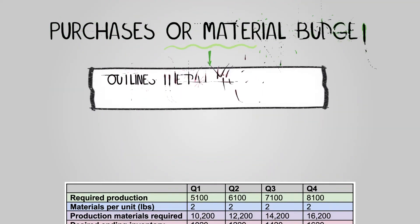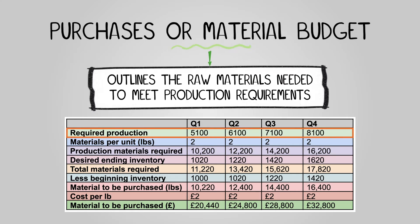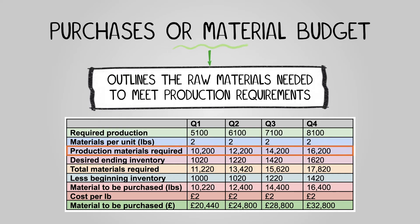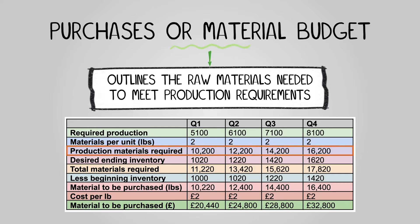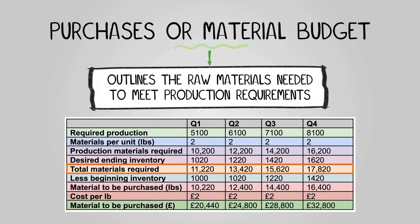The purchases or materials budget outlines the raw materials needed to meet production requirements. Key elements include required production — the number of units to produce during the period — materials per unit, the quantity of raw materials required to produce each unit, production materials required — the total raw materials needed to fulfill production requirements — and desired ending inventory, the quantity of raw materials you want to still have in stock at the end of the period. Total materials required is calculated by adding production materials required to the desired ending inventory.